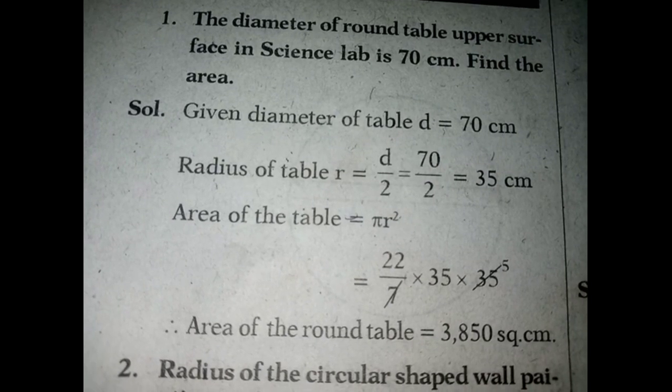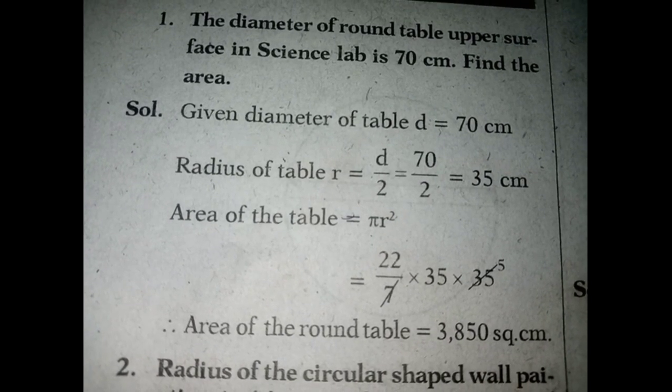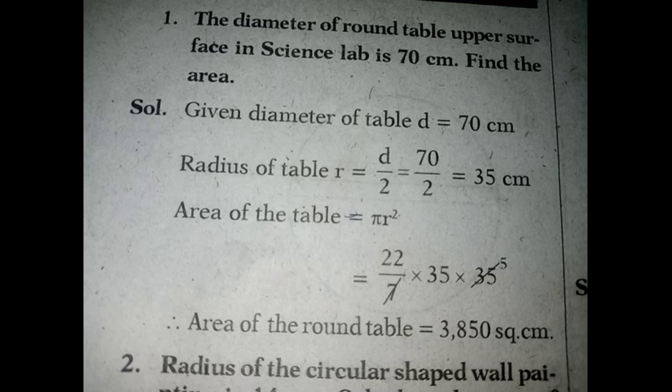Area of the table equals πr squared. Equals 22 by 7 into 35 into 35.